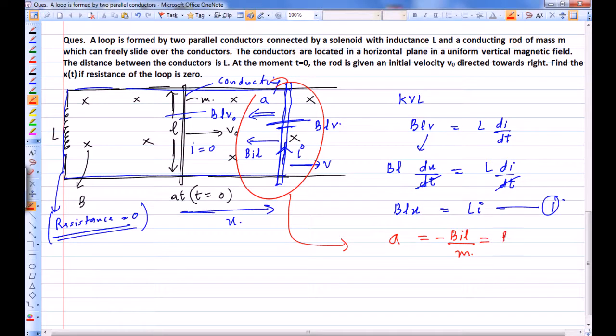That is going to be B² L² V over ML. If we look at it carefully, this rod is undergoing SHM. Look at this equation carefully—this is your d²x/dt² equals minus ω² x.